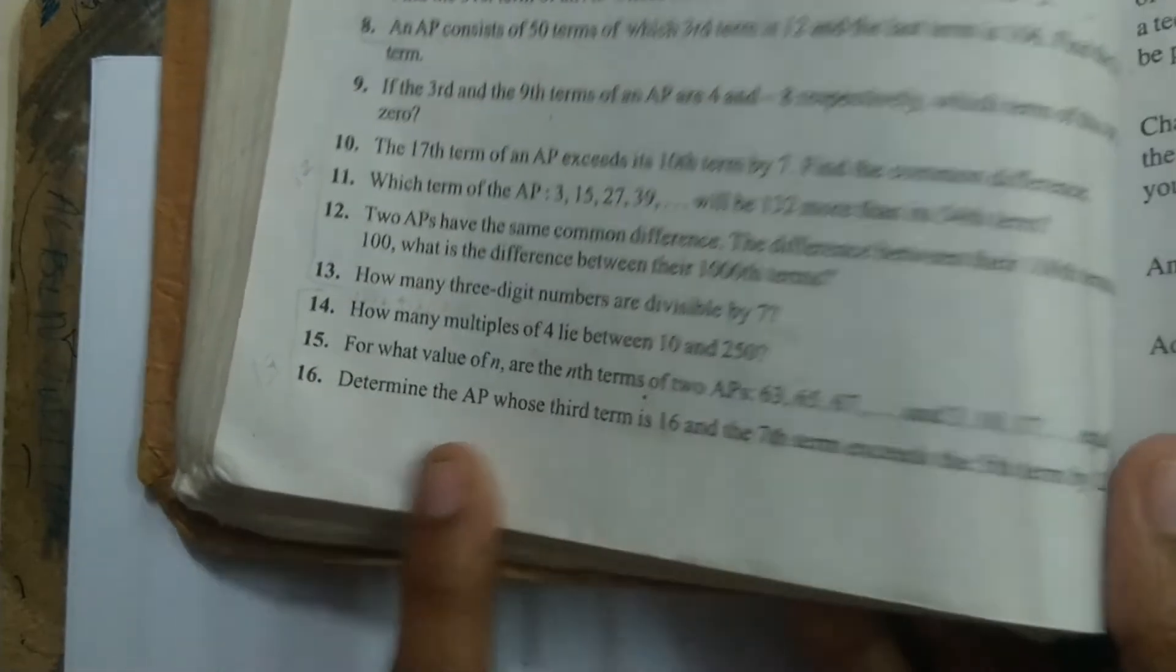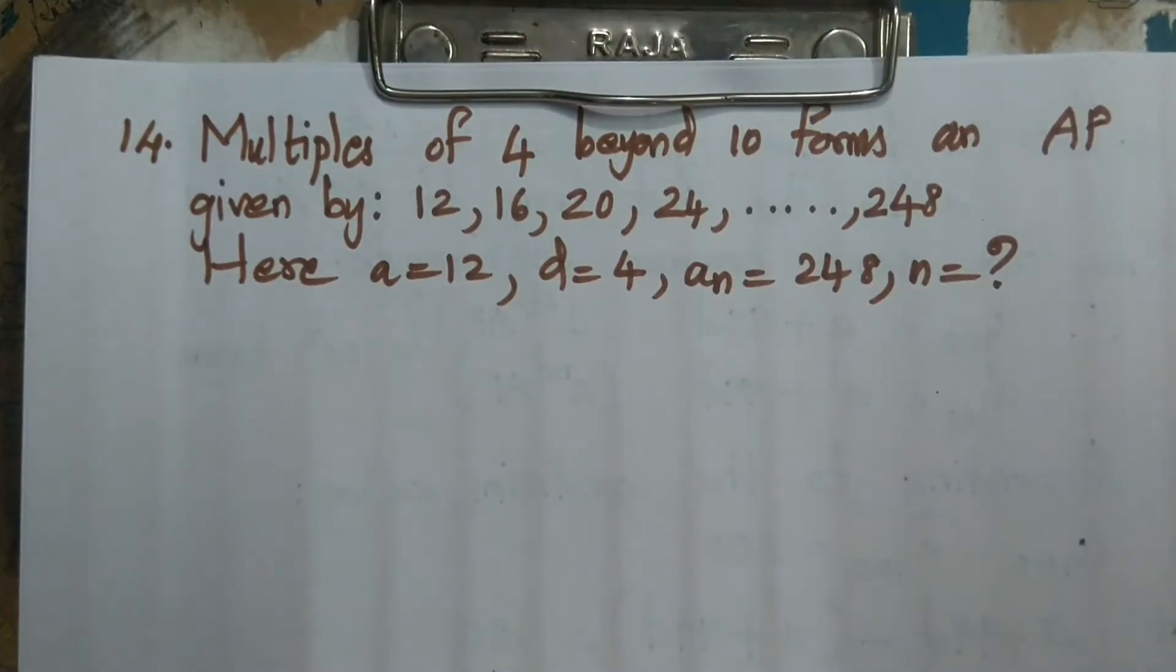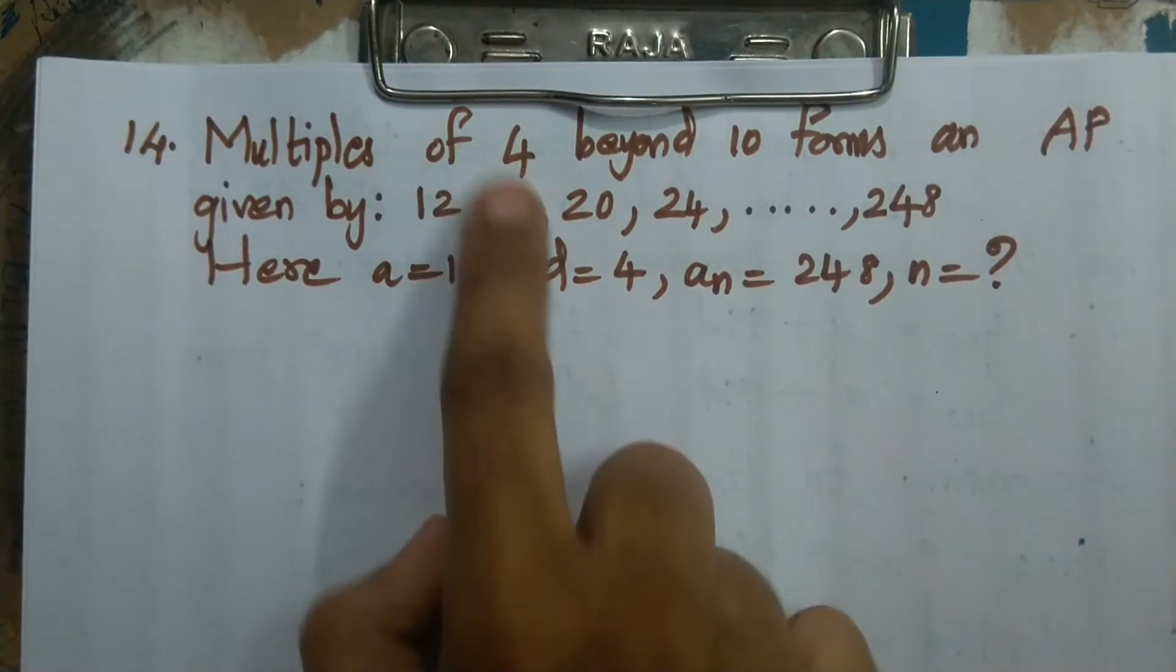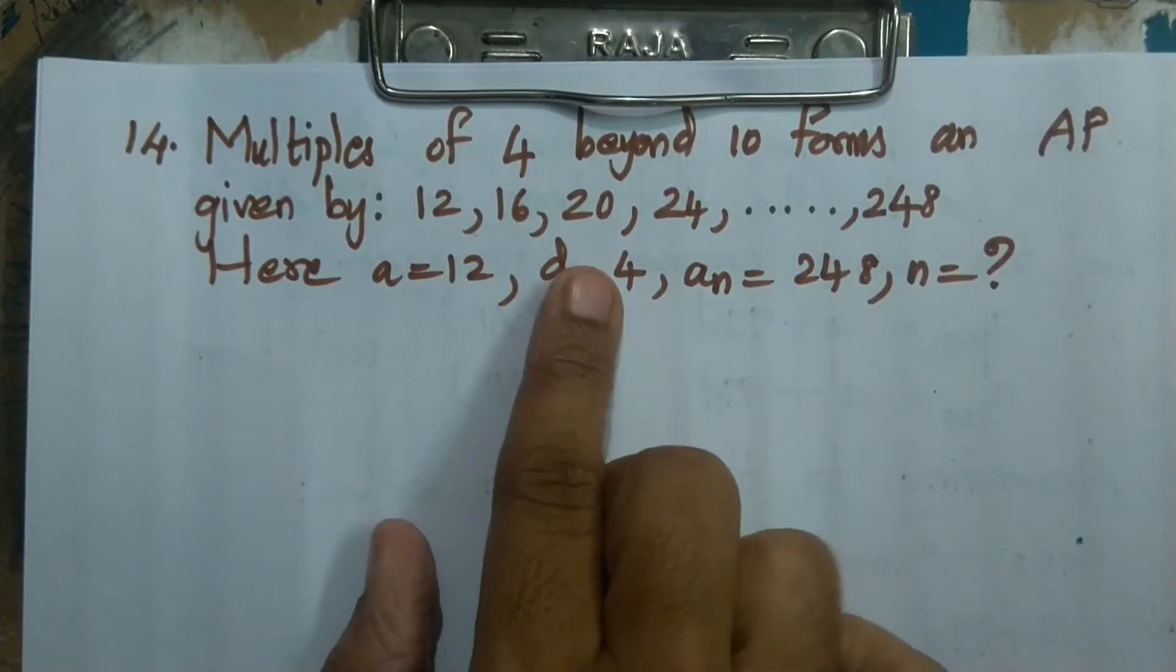Again, n value. How many? Now, we have 4 multiples. So this is the AP list. We have 10 to 250. So in 10, the first 4 is 12. Again, plus 4. Because 4 table. 4 add to the table. 16, 20, 24.